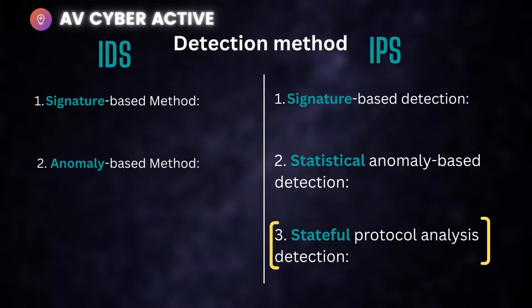The last method is stateful protocol analysis or detection. This is also rare to come by. The IDS engine built inside the IPS device recognizes deviations in protocols by comparing observed events against baselines formed inside the device. It then takes a decision on whether that volume of traffic or suspicious traffic should be allowed or considered benign.